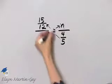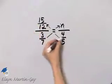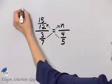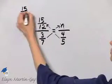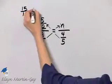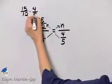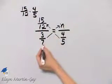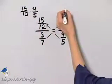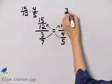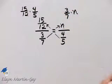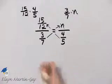So what are these cross products? 15 over 12 times 4 fifths—that's one cross product. The other cross product is 3 sevenths times n. So we'll set these equal to each other.